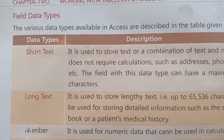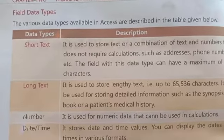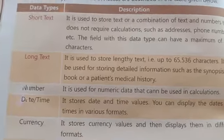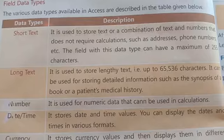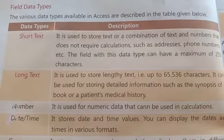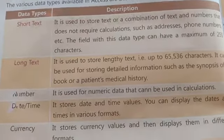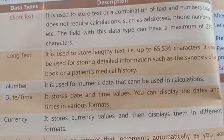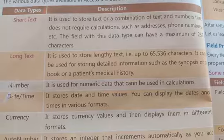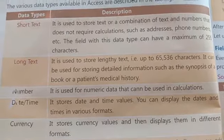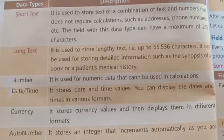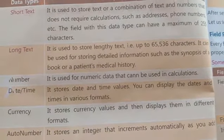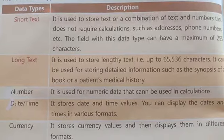Field data types: The various data types available in Access are described in the given table. You can see the data types and their descriptions. First is Short Text — the maximum value is 255 characters. In Short Text, you can use a maximum of 255 characters.